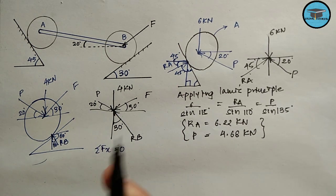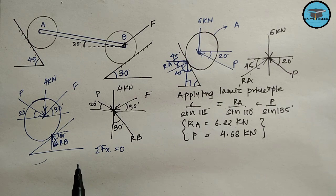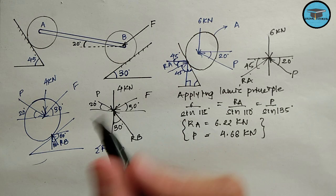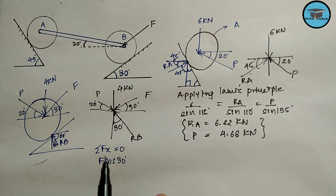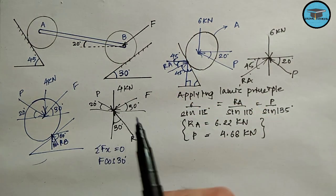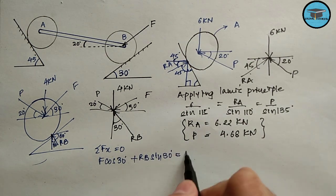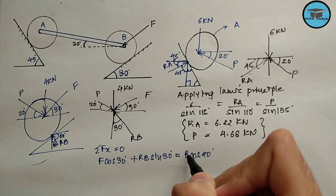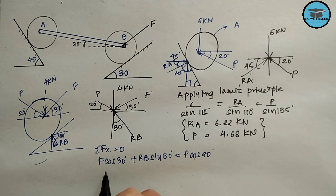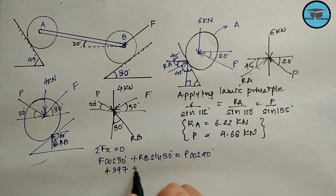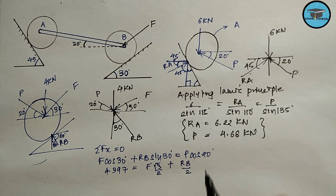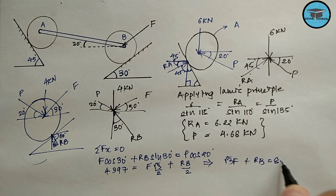Applying the first condition of equilibrium, sigma F_x equals zero: F cos 30 plus R_B sin 30 equals P cos 20. With P equal to 4.68 kN, this gives 4.397 equals (√3 F)/2 plus R_B/2, so √3 F plus R_B equals 8.79. Let us call this equation number one.